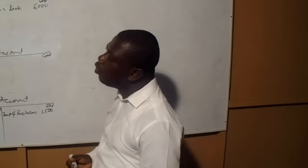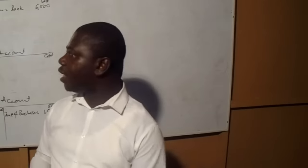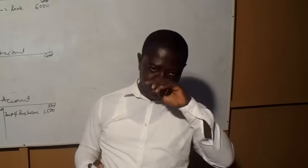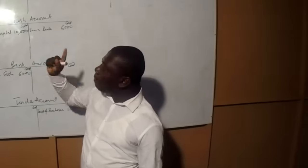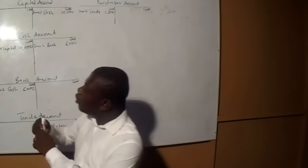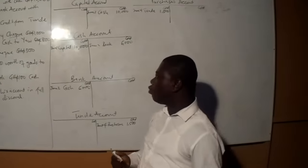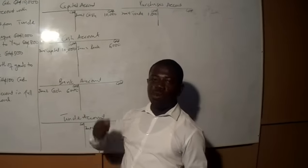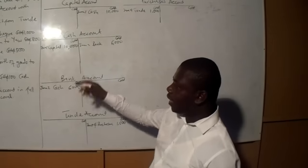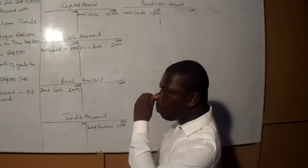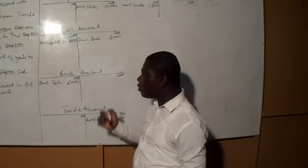The next transaction: bought goods by cheque, 1,000. What are the two accounts involved? Once we are buying goods, the accounts are purchases and bank account — bank account because of cheque. Any time you see cheque, it is bank account that will be affected because the cheque will be withdrawn from your bank account. So the two accounts here are purchases and bank account.